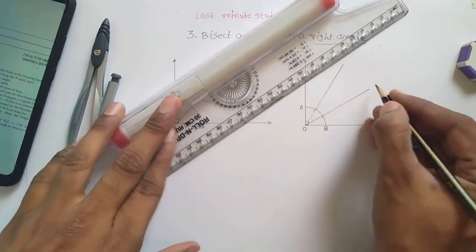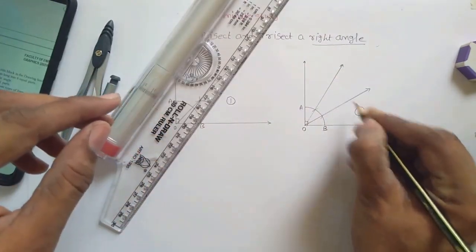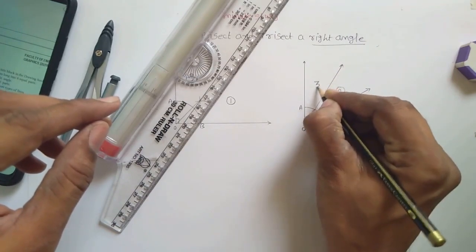So now intersecting with origin. Like this. So this is first part, second part, and third part.